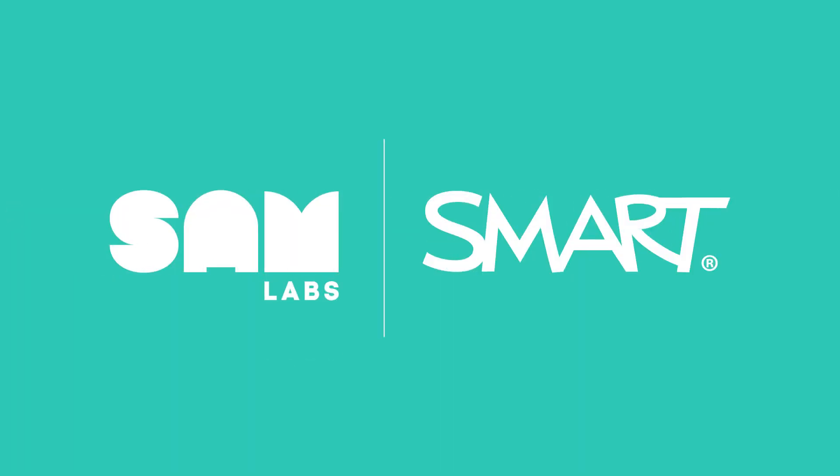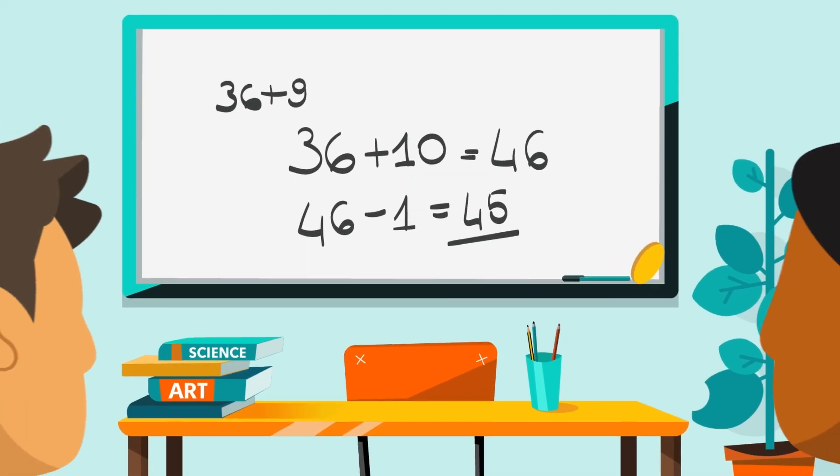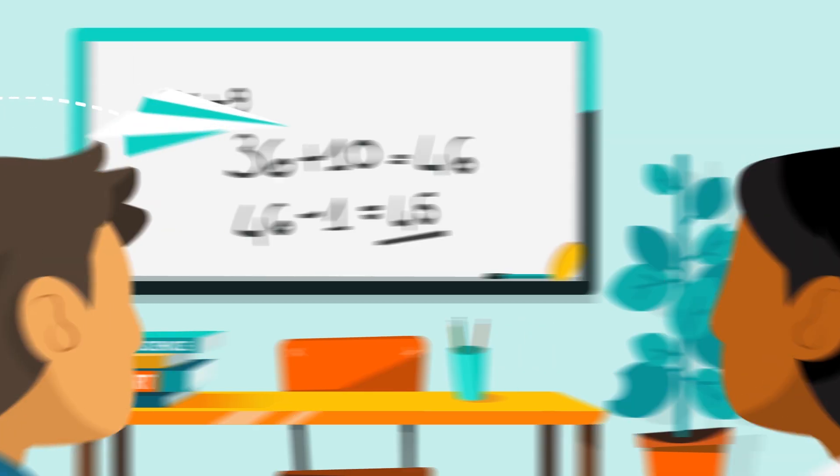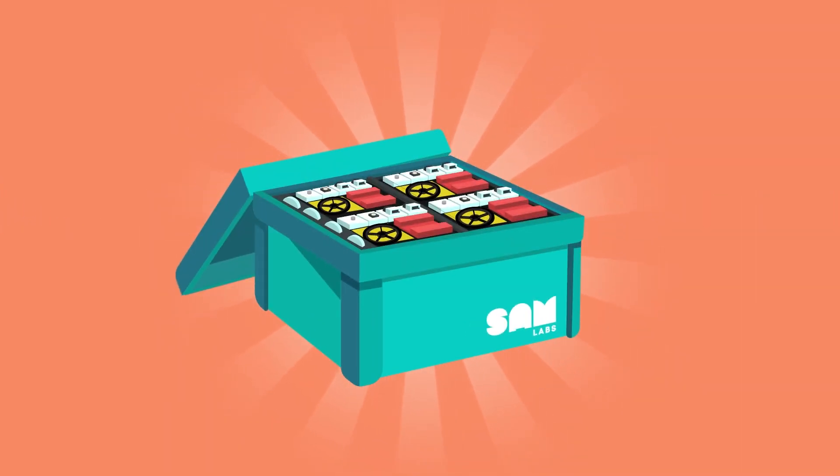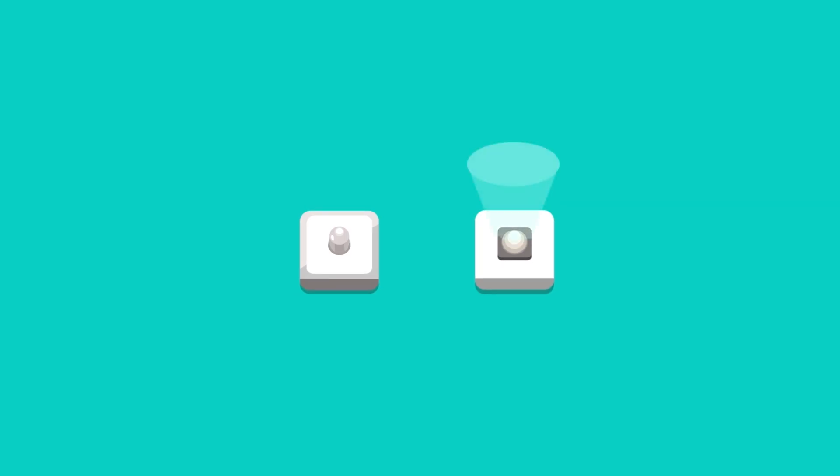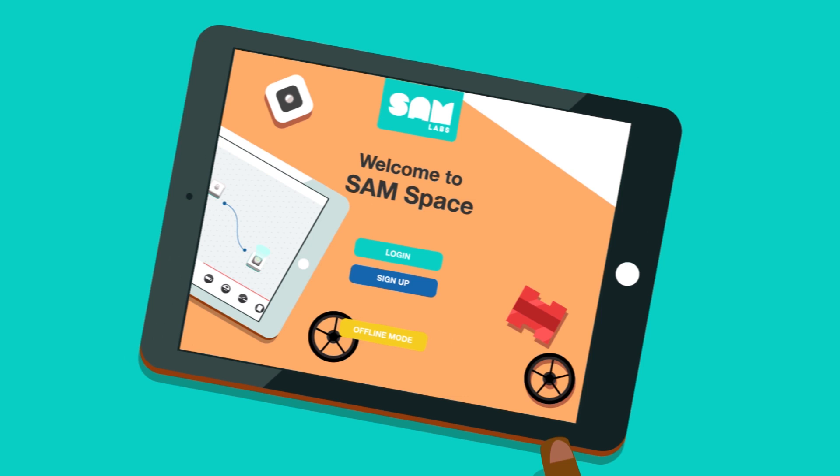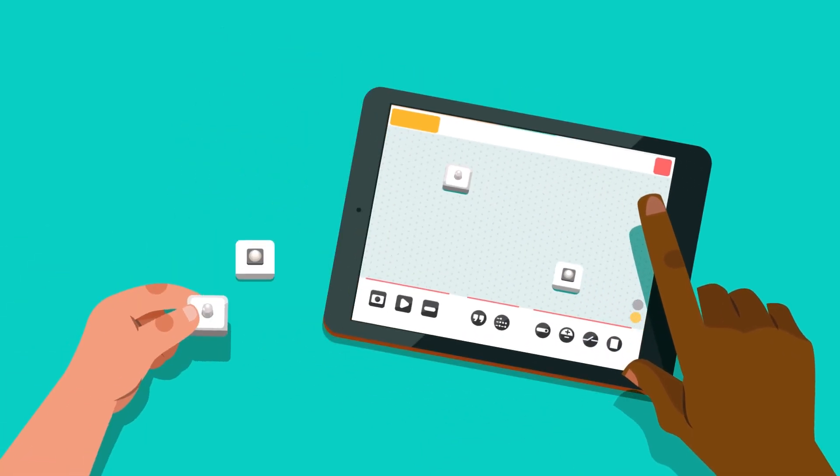Smart Coding Kits by SAM Labs are a fun way of bringing STEAM to life in the classroom, supporting educators to build engaging experiences for students. Every kit contains a range of interactive electronic blocks that connect wirelessly to our apps, giving students a tangible connection to what they're learning.